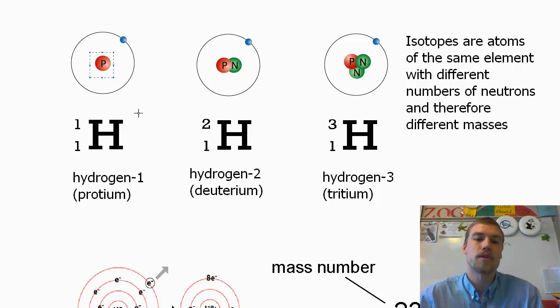There are different amounts of them in the world, and so what they do is they calculate a weighted average of those, and that's how they come up with the 1.008. So most of the hydrogen in the world is protium or hydrogen 1, but there are trace amounts of hydrogen 2 and hydrogen 3.